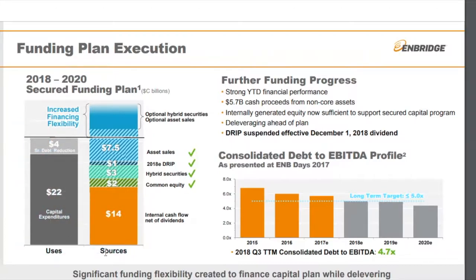On the left, they outline the sources of funding, and on the right the uses. Between the $7.5 billion of asset sales, issuance of common equity and preferred shares, as well as proceeds from the DRIP program year to date, combined with the expected internally generated cash flow, they feel they're in a position where they no longer need this equity funding from the DRIP program.